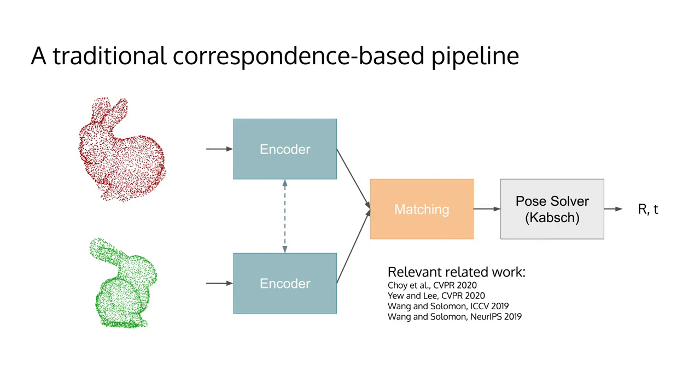There are multiple ways of tackling point cloud registration in the deep learning setting, but today we will focus on the arguably most popular and successful one: correspondence-based methods. A traditional correspondence-based pipeline follows a similar structure to what is depicted in this diagram.